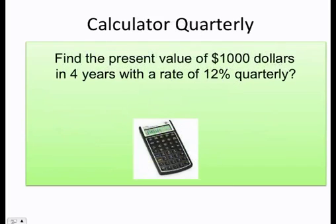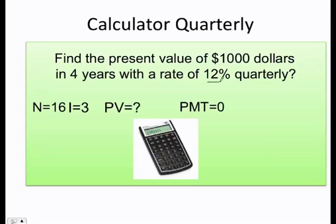If I'm doing it in the calculator, N equals 16, that comes from 4 times 4, I equals 3, which comes from 12 divided by 4, same information, and you get your present value.